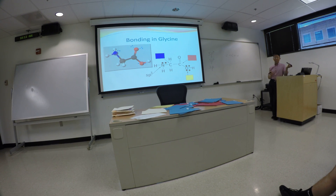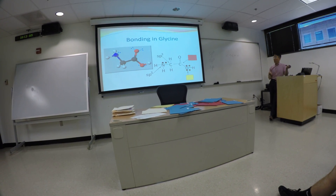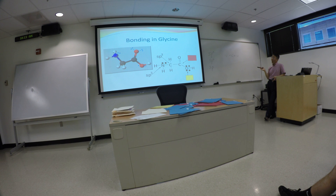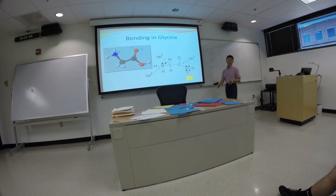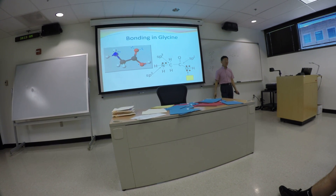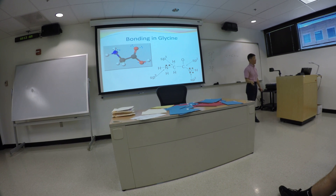What about the carbon next to it? sp3 — we also have four bonds in there, no lone pair, all bonding pairs. What about the carbon next to it? There's a double bond in there. Every time you see a double bond, that's sp2. But this oxygen has a total of four valence electron pairs, so four valence electron pairs requires sp3 orbital — that's sp3.